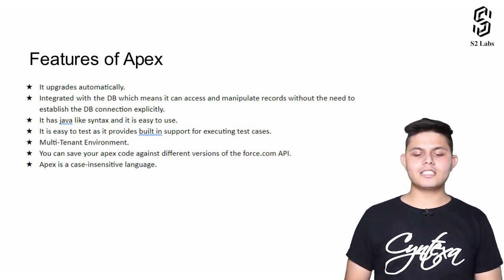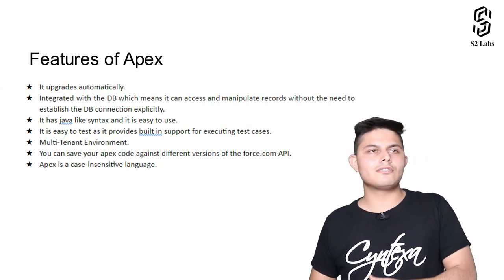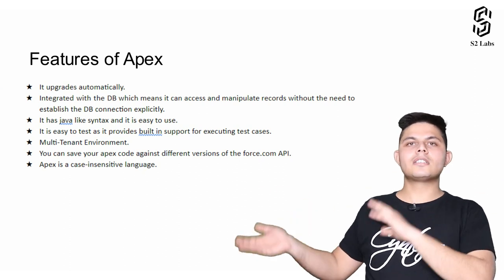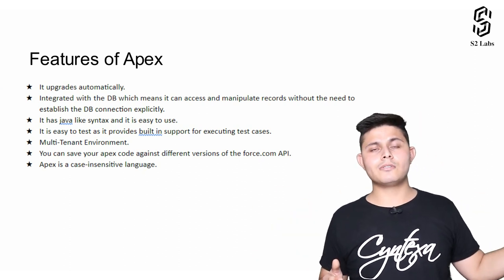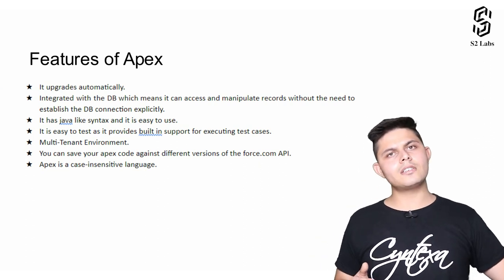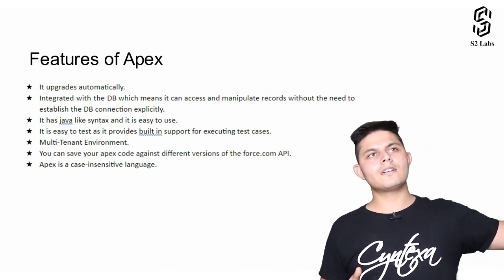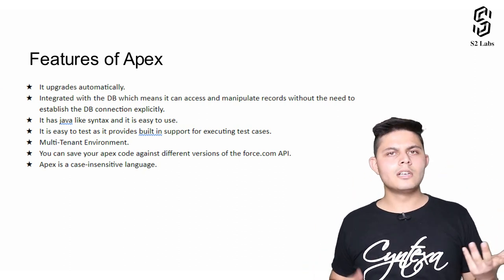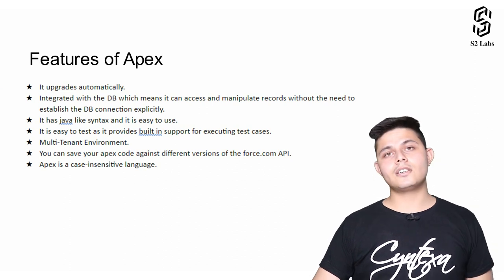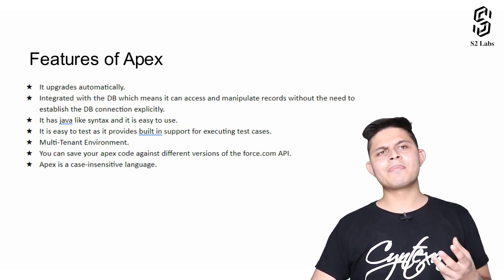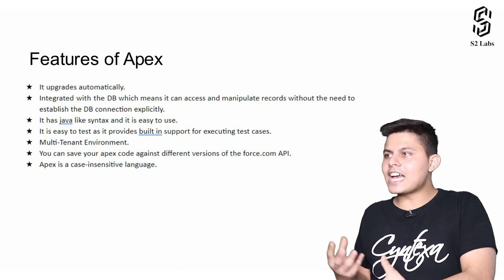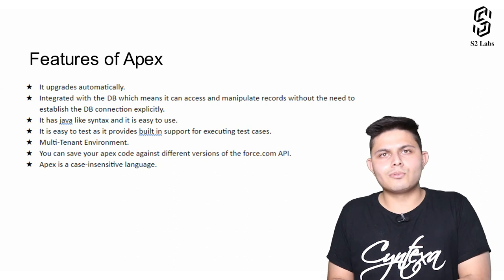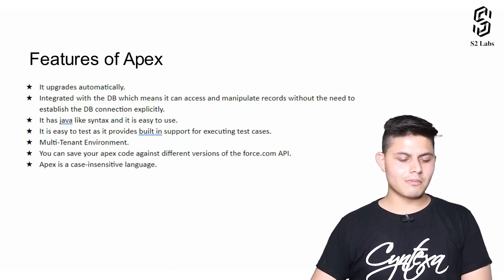You can save your Apex code against different versions of the Force.com API. Imagine you wrote code three years back and you're worried about what will happen when the next update comes. That code will be saved with the version it was created in, and newer versions will not impact that earlier code. This was a concern many developers had while creating enterprise applications, but it's not something you need to worry about in Apex.